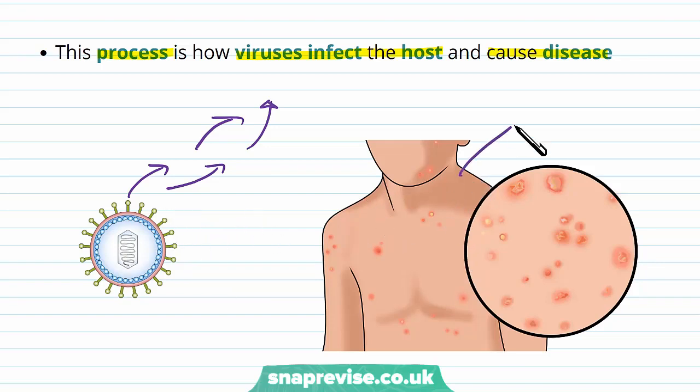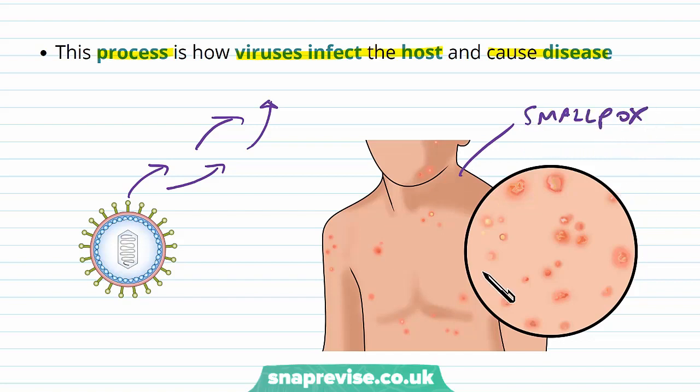For example, with smallpox or chickenpox, we see lesions or spots all over the body due to this damage that viruses are causing.